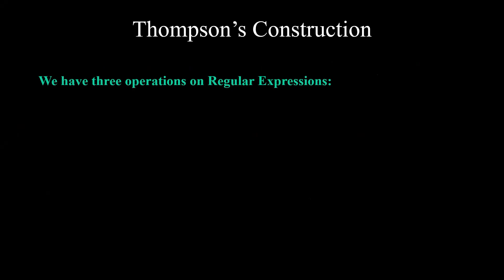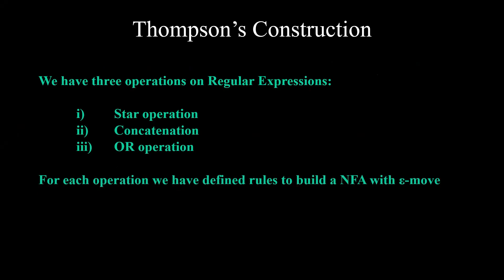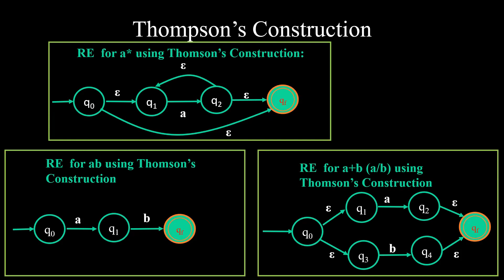We have already covered Thomson's construction in the previous slides. We know that we have three operations on regular expressions: star, concatenation, and OR operation, and specific rules have been defined to build an NFA with these. In the star operation we have four epsilon moves: q0 to q1, q0 to qf, q2 to qf, and q2 back to q1. In concatenation we don't have any epsilon move. In OR we have four epsilon moves: q0 to q1, q0 to q3, q2 to qf, and q4 to qf.